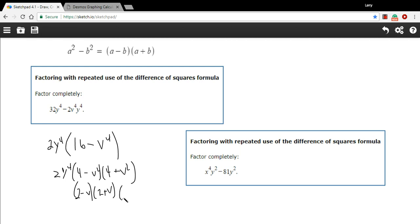And then we have all the other stuff too, so I've got my 4 plus v squared, and I got my 2y to the fourth. And now we've gone ahead and factored this thing as far as I think we can factor it, so we'll call this our answer.